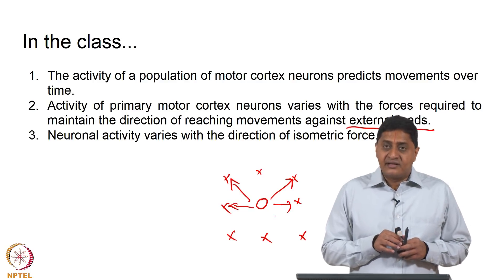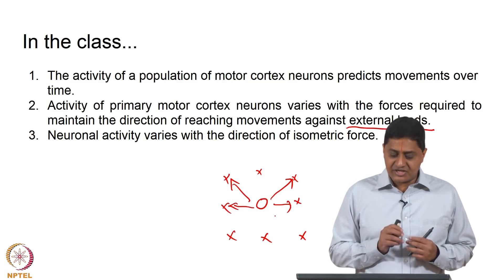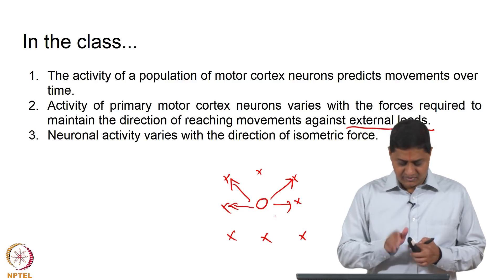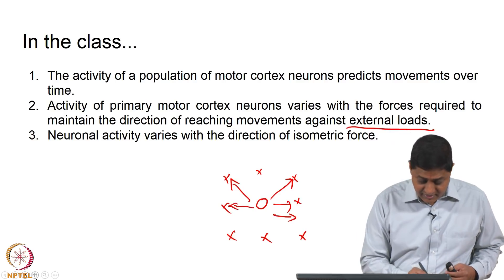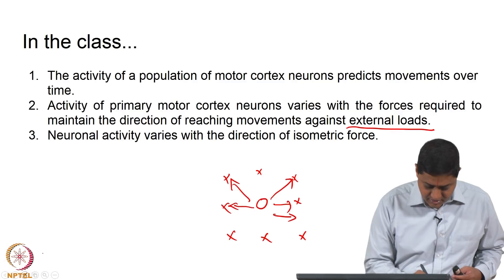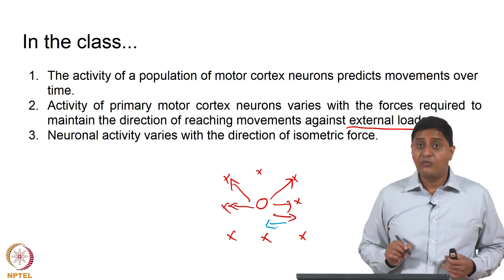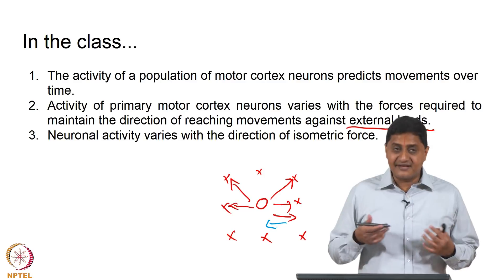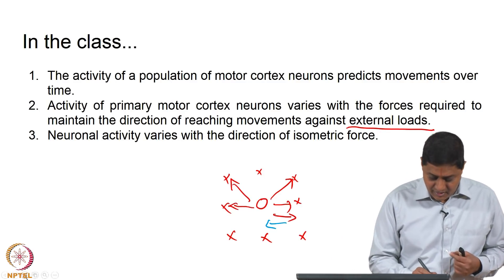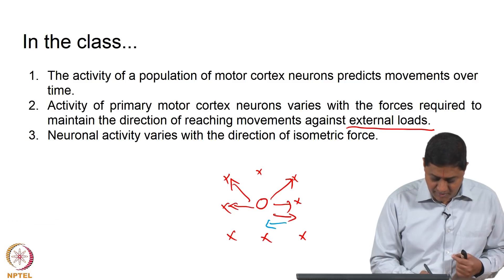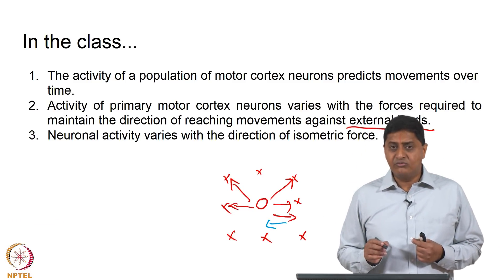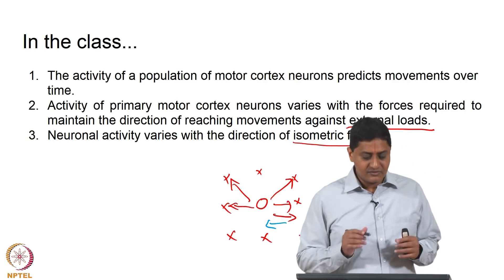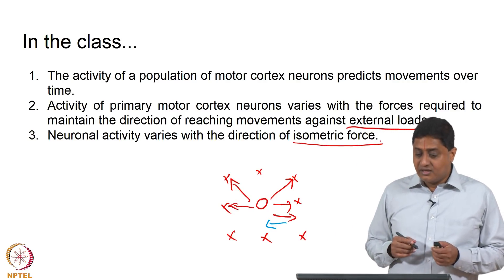If I add an external load that either partially or completely opposes the movement — suppose the monkey is trying to move to the right and the external load acts in the opposite direction — you would expect greater neural activity for the movement to happen. That is the second question. The third question is about what happens when there is no real movement, but force is produced against a non-moving object: isometric force production. These are the three things we will discuss today.